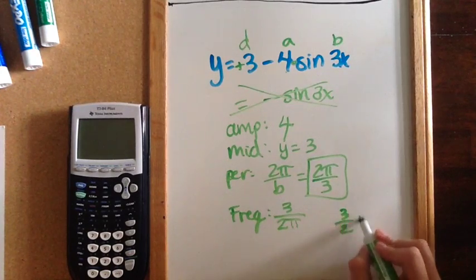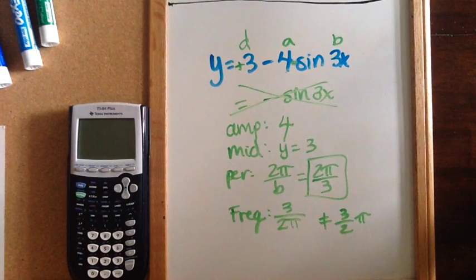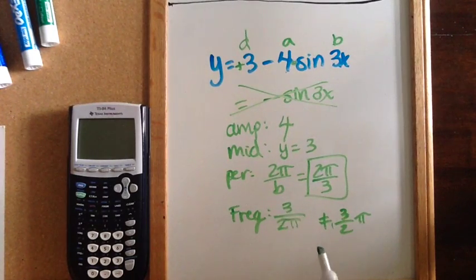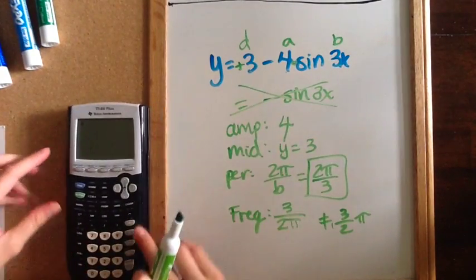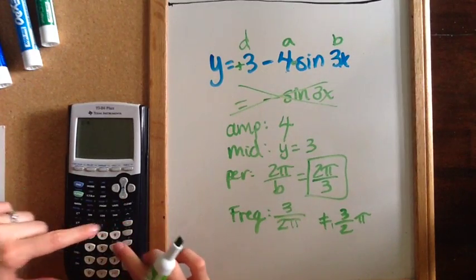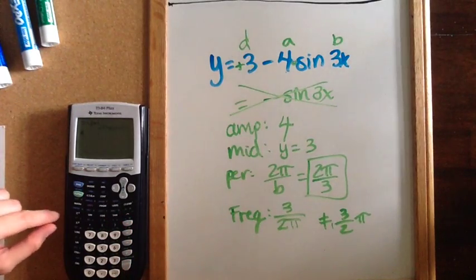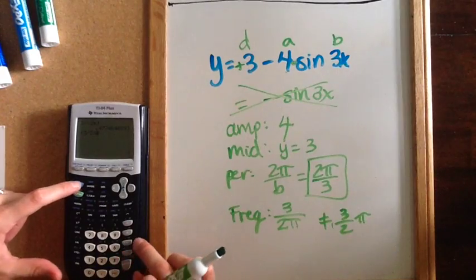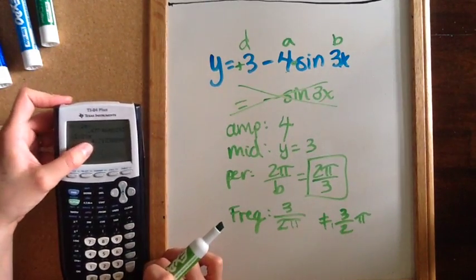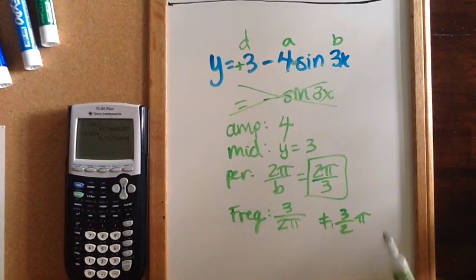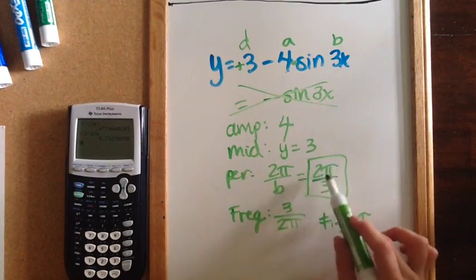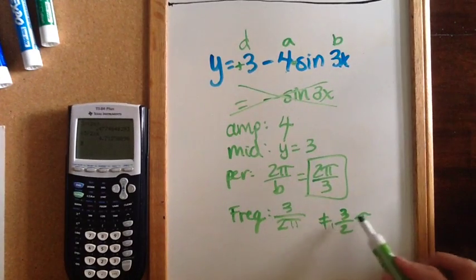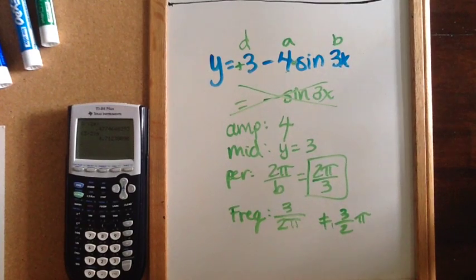Please be cautious: anytime you have pi written next to something, it could also be written in the numerator. So that's how you identify the amplitude, midline, period, and frequency from an equation for your sine and cosine graphs.